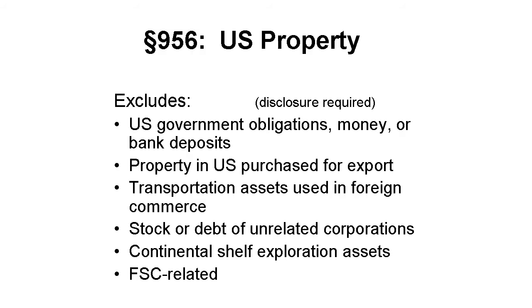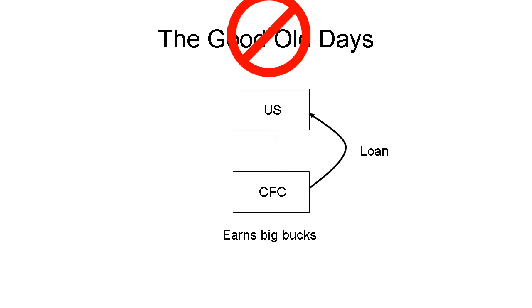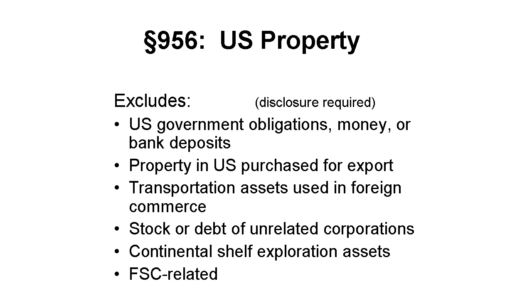It's my view that these regulations merely clarify existing law. There are several important exceptions to what is considered U.S. property. When one of the exceptions applies, the U.S. shareholder must disclose that on his or her tax return. The idea of Section 956 is to cause taxation only when the shareholder, or a related person, effectively gets to use the CFC's earnings before there is a dividend.